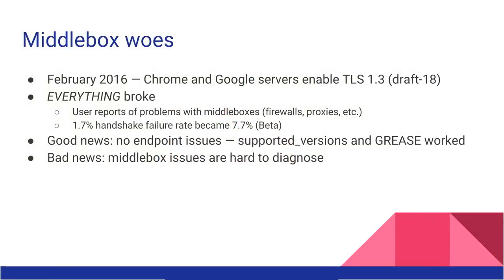With that resolved, we were very excited to finally turn this on in February 2016 — and everything broke. We got a lot of user reports that firewalls, proxies, antiviruses, and random pieces of software or devices sitting between the client and server were doing something. The impact was that we lost about six percentage points of handshake successes, and this was on the beta channel where you'd expect fewer of these enterprise-y features. Six percent is not within our breakage budget — we would need a fallback without any question.